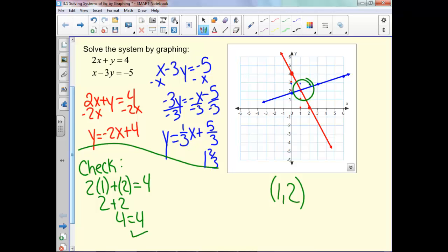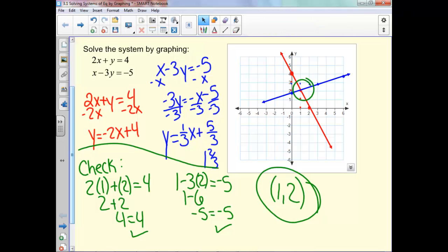Try it in the other one: 1 minus 3 times 2 equals negative 5. 1 minus 6, negative 5, equals negative 5. So this is our answer.